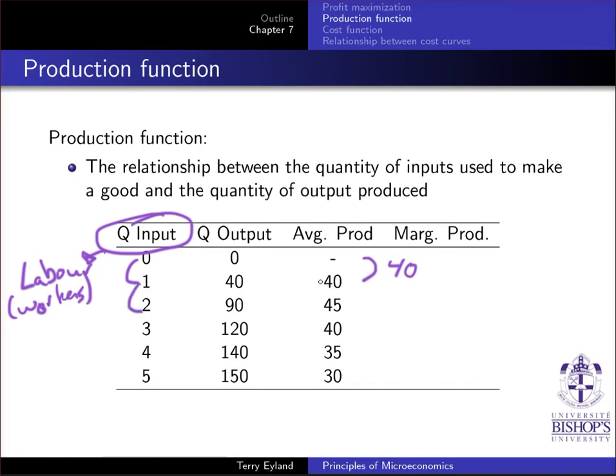If I go from 1 to 2, the second worker brings me an extra 50 units. 2 to 3, well I had 90 units. If I hire that third person, I'm going to get an extra 30.